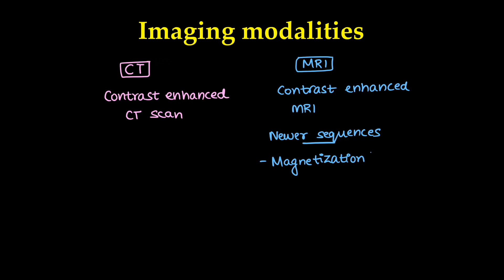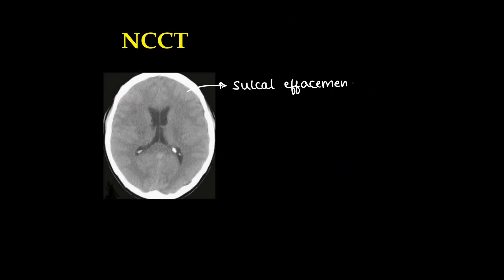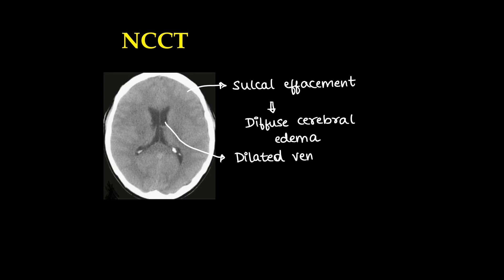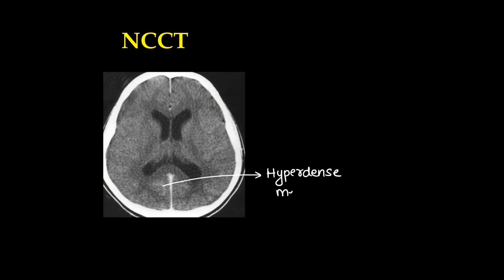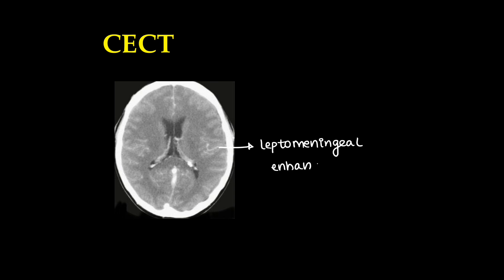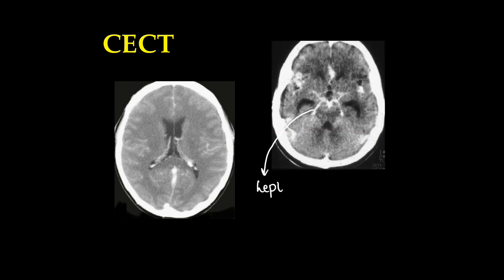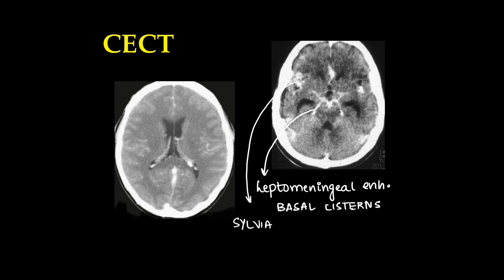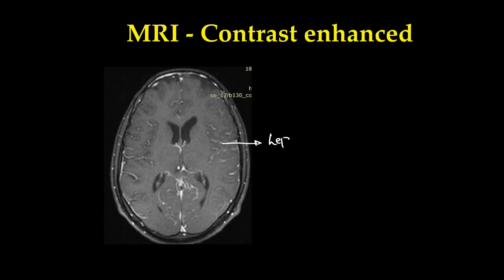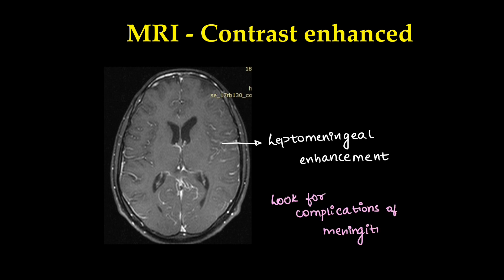Newer sequences like magnetization transfer imaging and diffusion tensor imaging are also coming up. On non-contrast CT, we can see sulcal effacement due to diffuse cerebral edema, dilated ventricles or hydrocephalus, and sometimes hyperdense meningitis, though that is a rare finding. On contrast-enhanced CT, we can see leptomeningeal enhancement along the cerebral convexities, sulcal spaces, and basal cisterns — mainly found in tubercular meningitis but also in pyogenic. Contrast-enhanced MRI has similar findings with leptomeningeal enhancement along sulcal spaces.